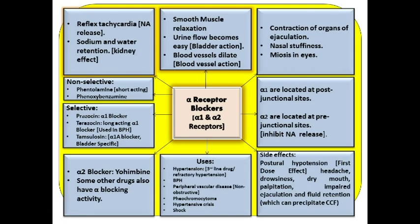Moving to other selective blocking agents: the alpha-2 blocker yohimbine — I haven't used it in therapeutics, but it is said to be an aphrodisiac drug providing some form of sexual pleasure enhancement, so it is mentioned in theory. Some other drugs in medicine also have additional alpha blocking action, especially antipsychotic drugs, whose side effect profile increases due to their alpha blockade properties.